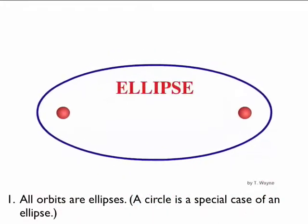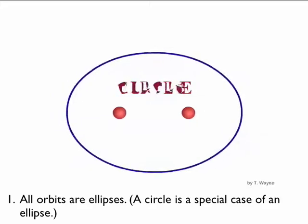What this animation is showing is the location of the foci for an ellipse, and when they come together it becomes a special case called a circle.